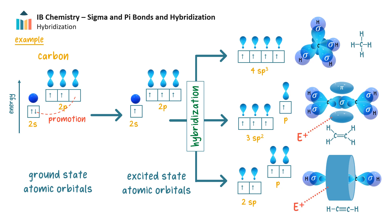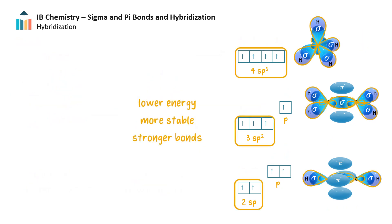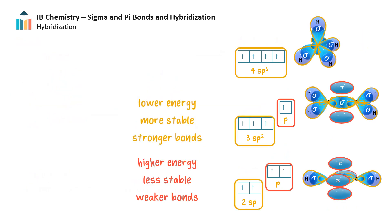If an electrophilic species is in the vicinity, it is attracted to these electron-dense regions, and that is why unsaturated compounds like ethene and ethyne are susceptible to electrophilic attack, and tend to undergo electrophilic addition, where the pi bond opens up to add on new substituents. Since hybrid orbitals are lower in energy and more stable, they result in stronger bonds. And unhybridized orbitals are higher in energy and less stable, and form weaker bonds.